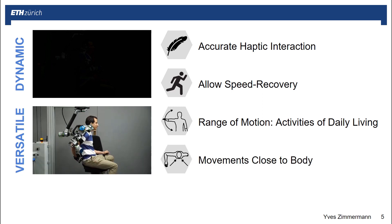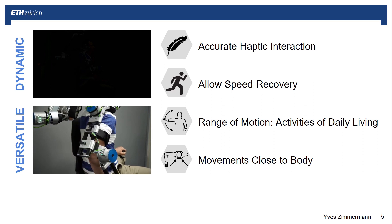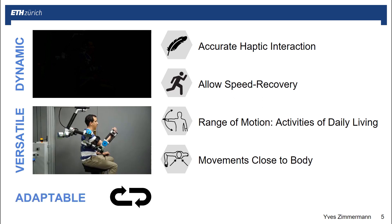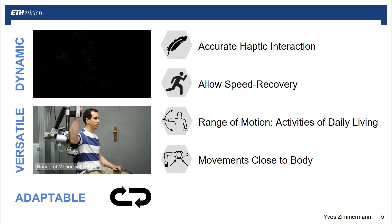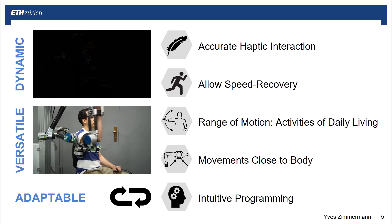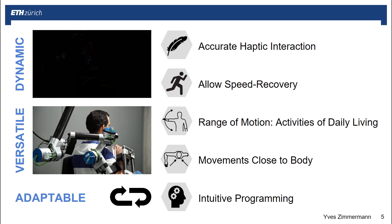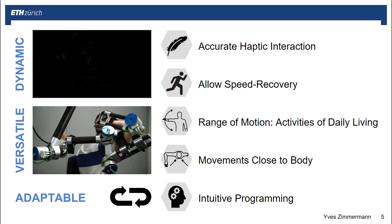We also set an emphasis on movements close to the body. In conventional rehabilitation, therapists use their own arms to assist the patient in a very intuitive manner and adapt quickly to new requirements. To make rehabilitation robots easy to use, we strive for a method that allows intuitively programming complex tasks.